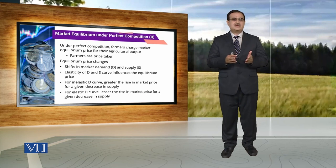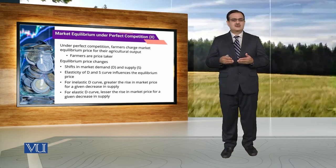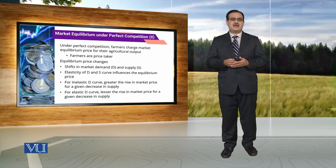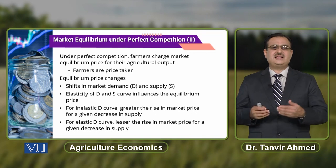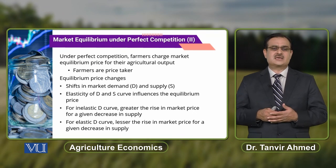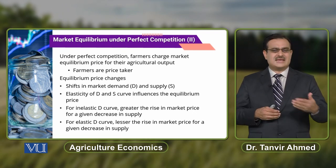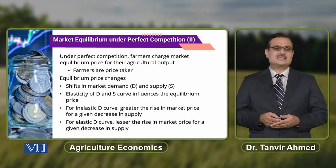If our demand curve is inelastic and there is a decrease in supply, because of that decrease in supply there is a greater rise in market price as compared to when the demand curve is elastic. If there is a decrease in supply when demand is elastic, there is still a rise in market price, but the rise in price will be lesser compared to when the demand curve is inelastic.